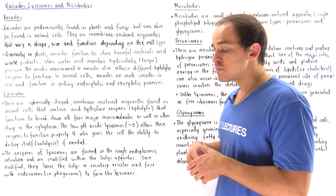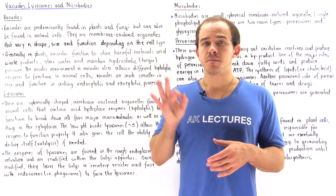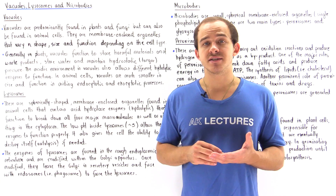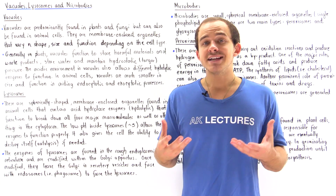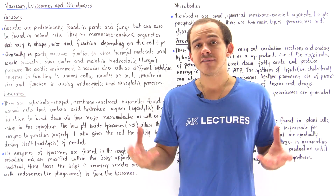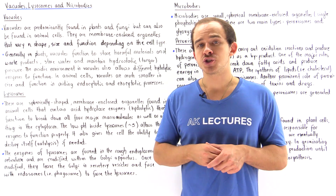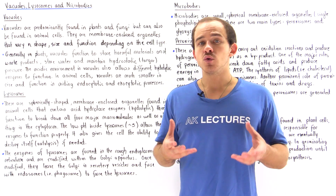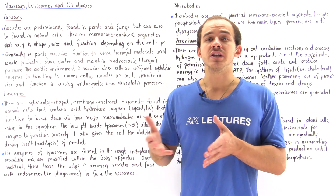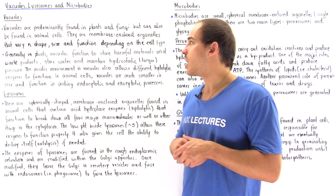In plant cells, the vacuole serves three important purposes. One, it stores the water used by the cell. Two, it creates and maintains hydrostatic pressure — the turgor pressure — that gives the plant cell its ability to resist forces as well as pressure. And three, the vacuole creates an acidic environment that allows hydrolytic enzymes to break down macromolecules as well as waste products.